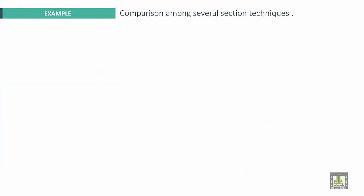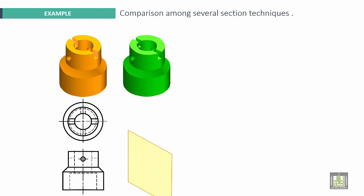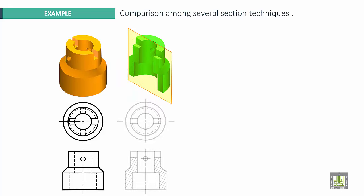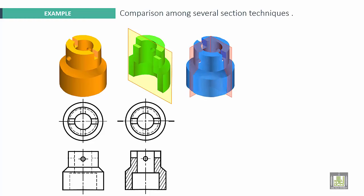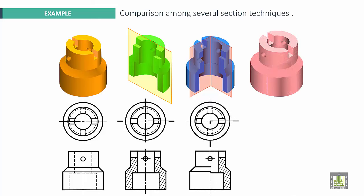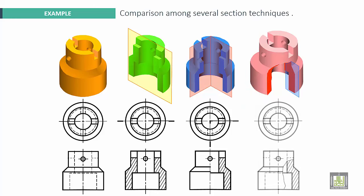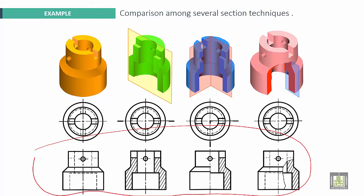Here is a comparison among several sectioning techniques using the same part. Here we have the full sectional view. With the same part, this is the half sectional view. And here it is the broken out sectional view. We can see the details in all sectional views.